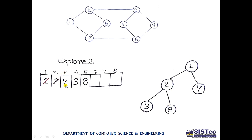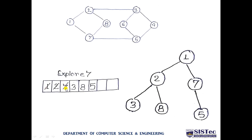Next, since 7 is at the front of the queue, we explore it. Node 7 is deleted from the queue. Exploring node 7, we have two options: go toward 8 or toward 5. Since 8 is already present in the queue, we do not take it. We take 5, inserting it into the queue. In the spanning tree, node 7 has one child: 5.